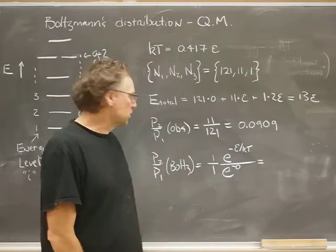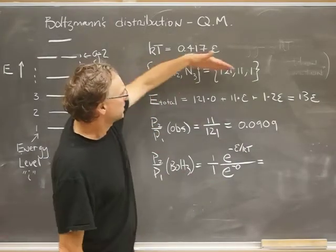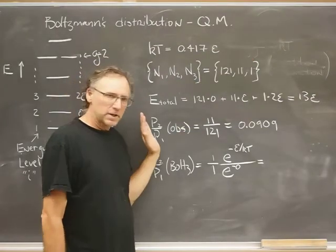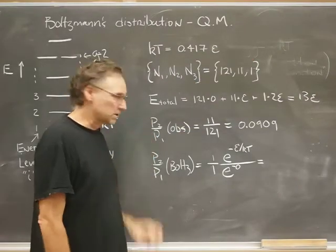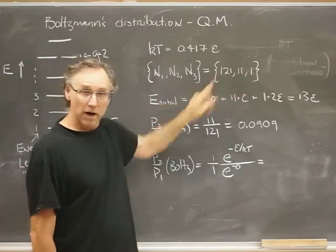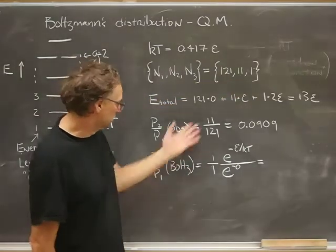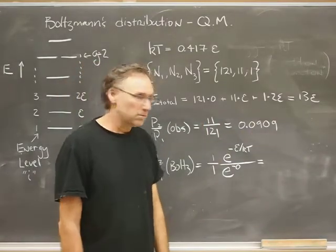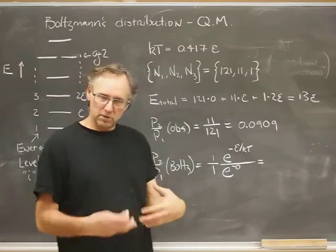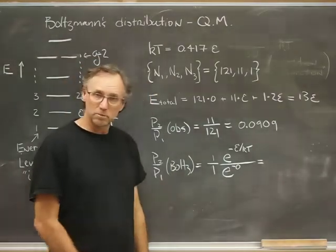What about the ratio of populations? According to this given configuration, the ratio of populations in state 2 versus state 1 would be 11 divided by 121, which turns out to be 0.0909. That's fine.